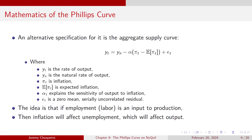You could think of this as an aggregate supply curve: Y = Yₙ − α(π − Eπ), where Y is output, Yₙ is the natural rate of output, π is inflation, Eπ is expected inflation, and α tells us the sensitivity of output to inflation — how output changes given a deviation of inflation from expectations.